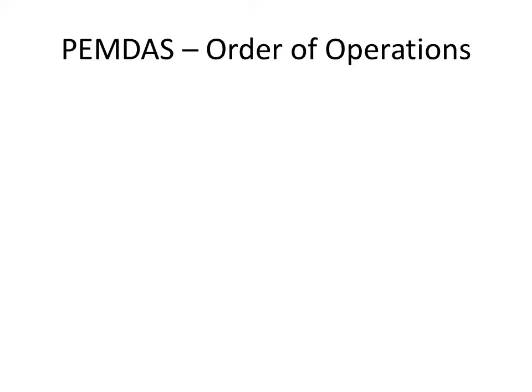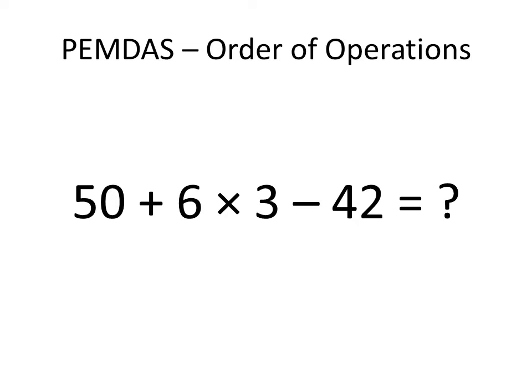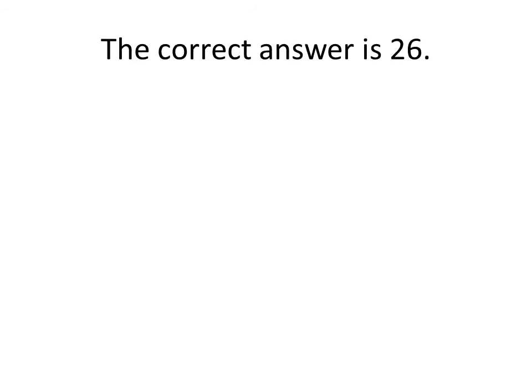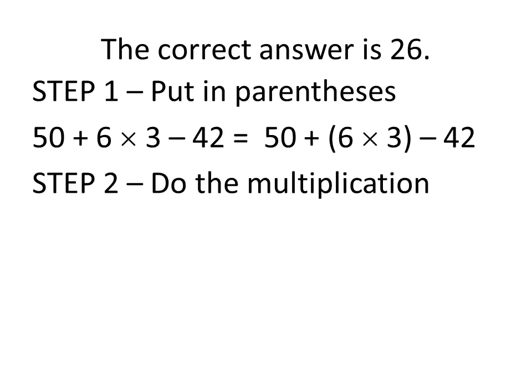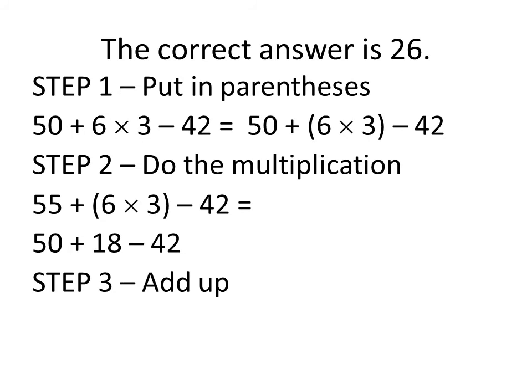For our last problem on this video, we're going to have a look at what's called PEMDAS. PEMDAS refers to the order of operations: parentheses, exponents, multiplication, division, addition, and subtraction in that order. Have a look at the problem and try to solve. The correct answer here is 26. First, take your problem and put the parentheses in around the multiplication, since we need to do that first. For step two, do the multiplication to get 18 in your new expression. Then finally, you add up the three figures to get 26 for our solution.